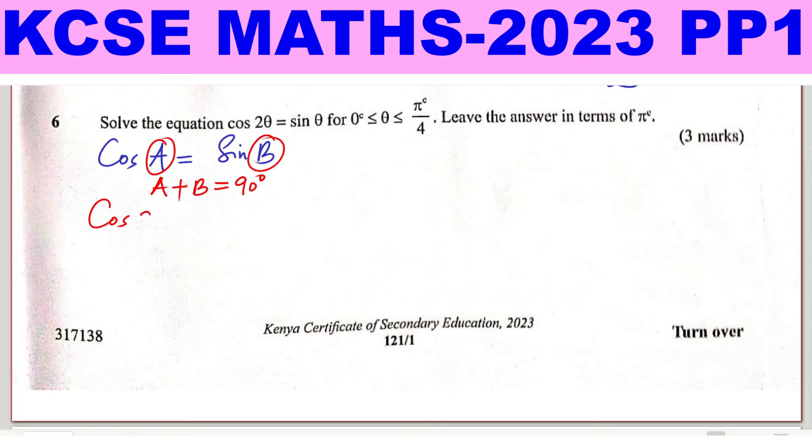So in this case, you have cosine of 2 theta equals sine of theta. When you take 2 theta plus theta, that should add up to 90 degrees. This will give 3 theta equals 90 degrees, and theta will be 30 degrees.